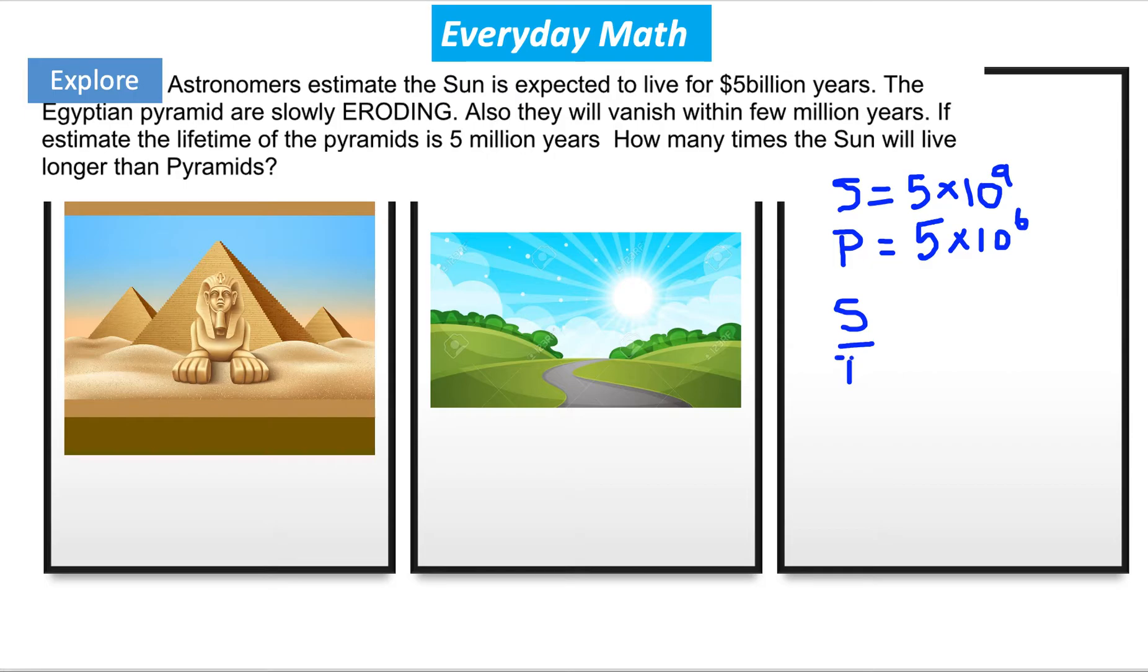The Sun over pyramid, and we calculate this as simple math, we find out, let me write the numerical value of the years, how many years the Sun is going to live, 5 times 10 to the exponent 9, and down, let me write this 9 a little better. And on the bottom part is going to be 5 times 10 to the exponent 6.